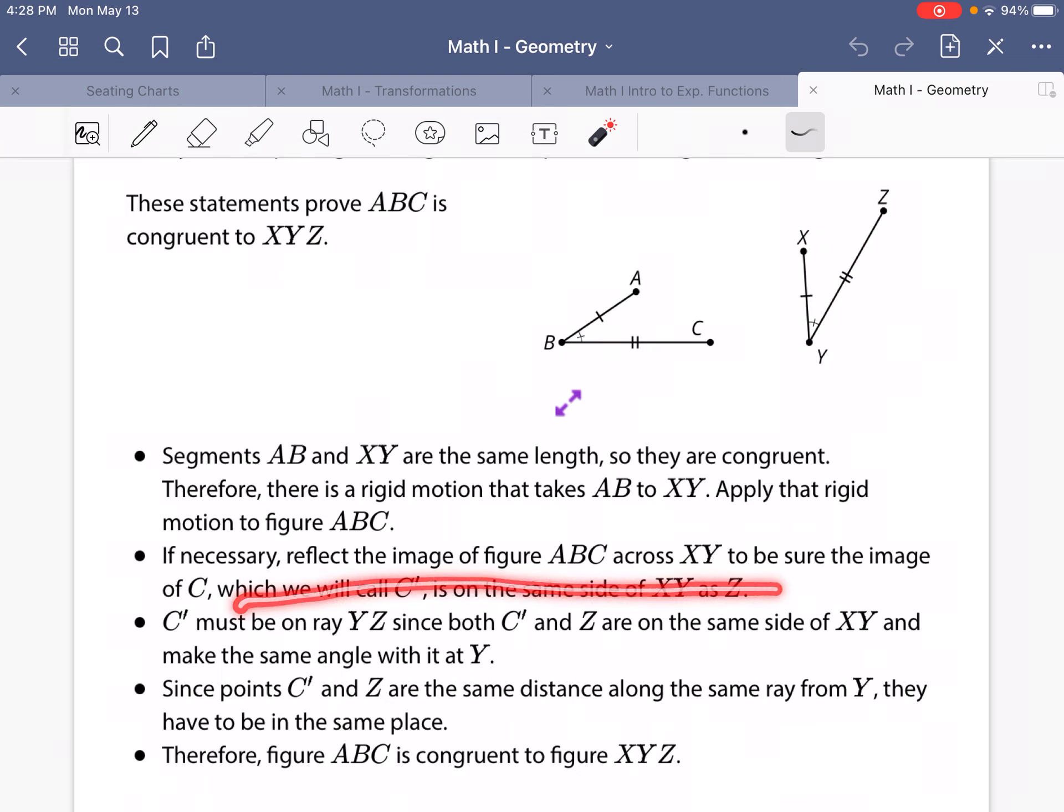If necessary, reflect the image of ABC across XY to be sure the image of C, which we call C prime, is on the same side.